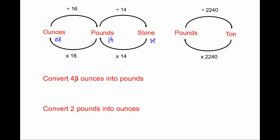Convert 48 ounces into pounds. To go from ounces into pounds, we divide by 16 because in each pound there are 16 ounces. So we do 48 divided by 16, and 48 divided by 16 is 3. So the answer is 3 pounds.